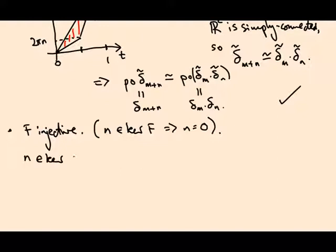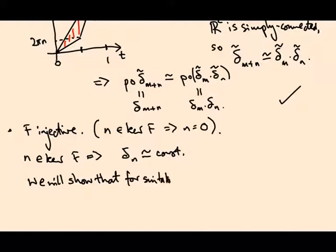OK, so if n is in the kernel of F, that means delta n is homotopic to the constant loop. So we want to prove that for each n, delta n is not homotopic to the constant, unless n is zero. And the way we're going to do that is we will show that for a suitable covering space, the monodromy around delta n is non-trivial.